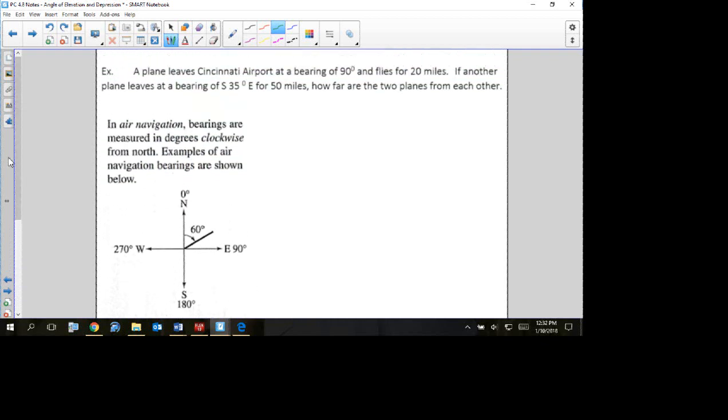So we read this question. It says a plane leaves from Sonny airport at a bearing of 90 degrees, so it does not tell you anything about direction, so that means we're going to be using one of these kind of examples. It flies for 20 miles. And then another plane leaves at a bearing of south 35 degrees east for 50 miles, so that one you use the other kind of bearing, and how far are the two planes from each other.